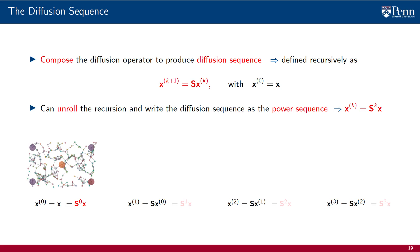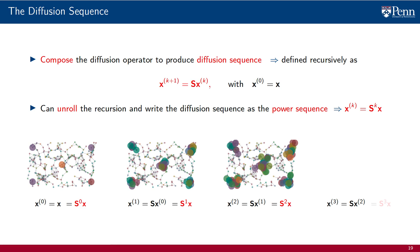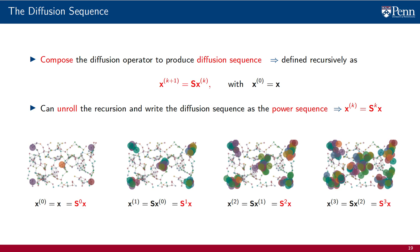Entry 0 of the diffusion sequence is the multiplication of the shift operator raised to the power of 0 with the graph signal — this is the graph signal itself. Entry 1 of the diffusion sequence is the product of S raised to the power of 1 with X — this is the diffused signal. Entry 2 is obtained by pre-multiplying the signal X with the shift operator S raised to the power of 2. Entry 3 is obtained by pre-multiplying the signal X with the shift operator S raised to the power of 3.